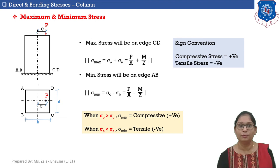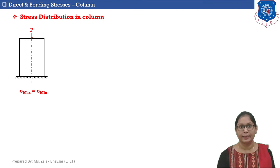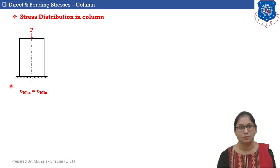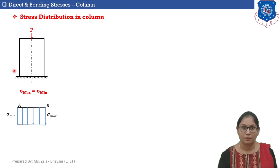Now let's discuss stress distribution in a column section. When the column section is subjected to axial load only, direct stresses are developed equally on both edges. So σmax equals σmin and the stress distribution diagram is uniform across edges A and B.